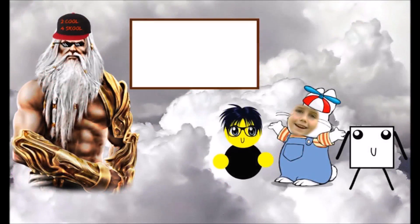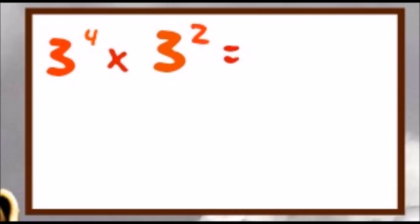Yes! First I shall teach you about adding exponents. No way, dude. Suppose you have the number 3 to the power of 4 multiplied by the number 3 to the power of 2. What you do is add the exponents and keep the base number. That makes it 3 to the power of 6.